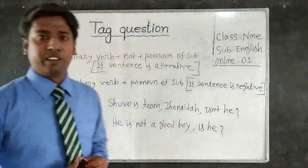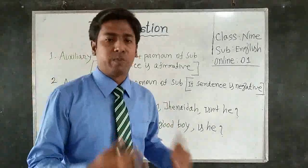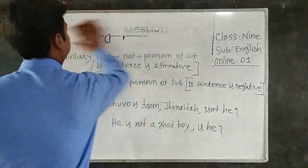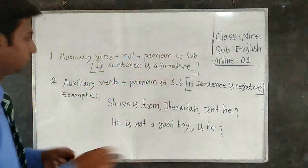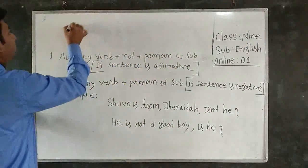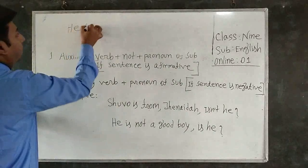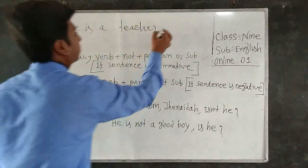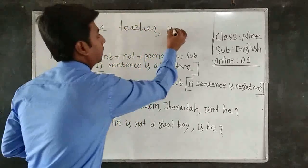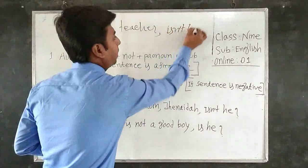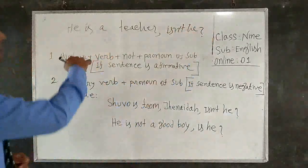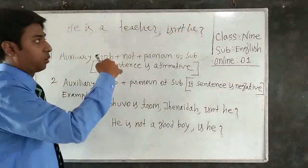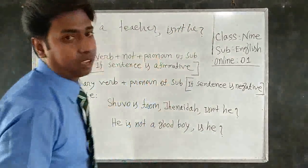Today I will give you some easy instructions to make a question tag. For example: 'He is a teacher.' The tag question is 'Isn't he?' Here, 'He is a teacher' is turned into a question by the tag 'Isn't he?' The words 'is' and 'he' form the question tag.